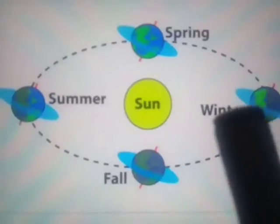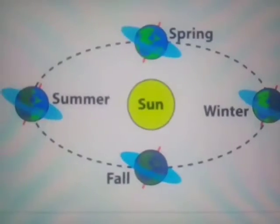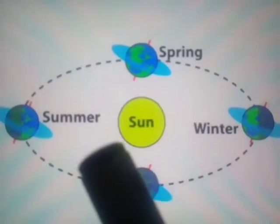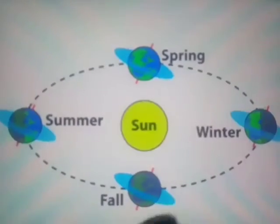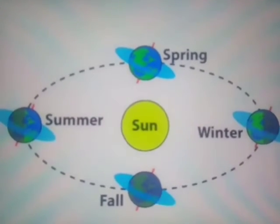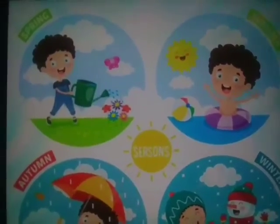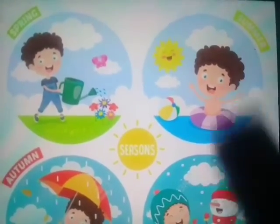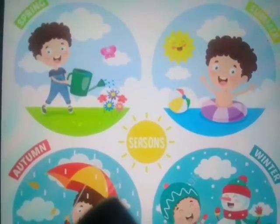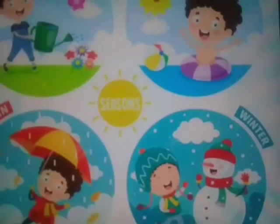The revolution of the earth causes the seasons on the earth. There are four seasons every year: spring, summer, winter, and autumn. Spring gets warmer. Summer is the hottest season. In autumn it gets colder, and winter is the coldest season.